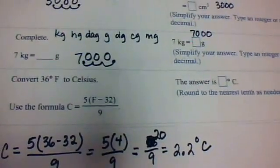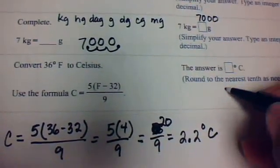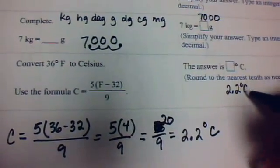So here, 36 degrees Fahrenheit will be 2.2 degrees Celsius.